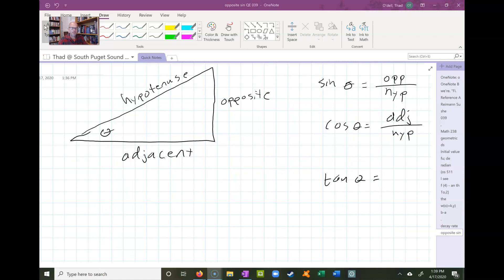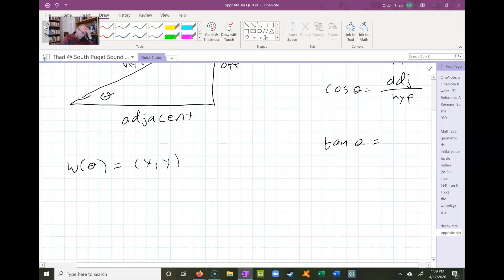Just to remind you, the wrapping function is a function where we plug in an angle in a unit circle and we get out the coordinates of the point where the terminal side of the angle crosses the unit circle.